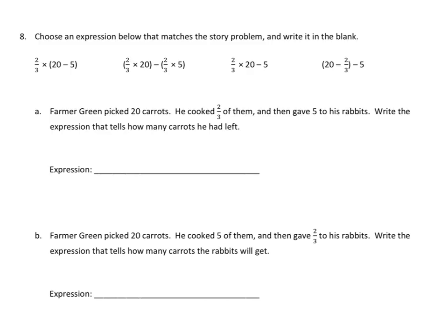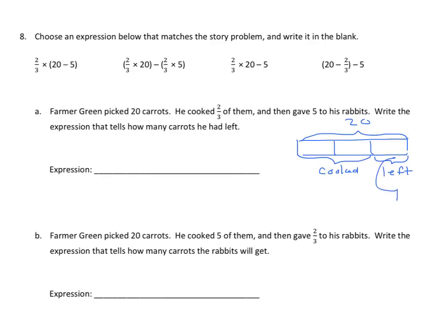In this problem we choose an expression from a bank that matches the story. Farmer Green picked 20 carrots, cooked two-thirds of them, then gave five to his rabbits. Using a tape diagram: the whole is 20, partitioned into three parts — two-thirds cooked, one-third left. Then subtract 5 given to rabbits. The expression is: (1/3 × 20) − 5. None of the four choices are exactly correct, since they show two-thirds times 20 — the amount cooked — not what's left.